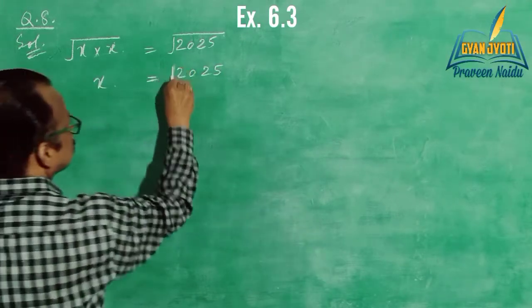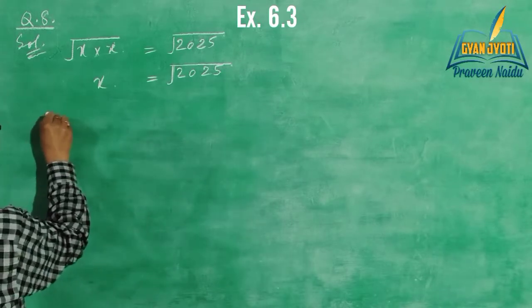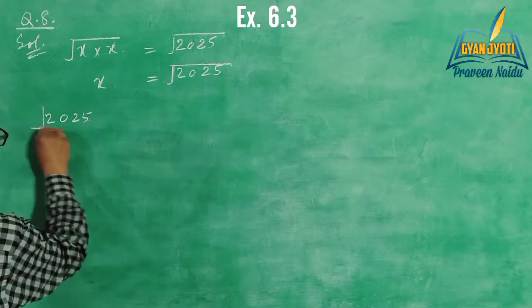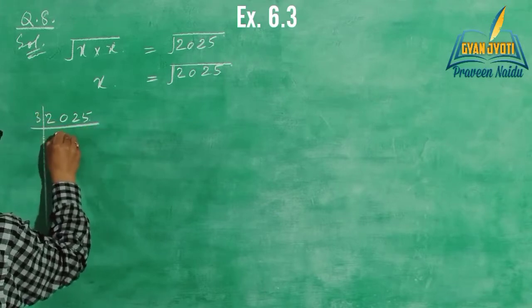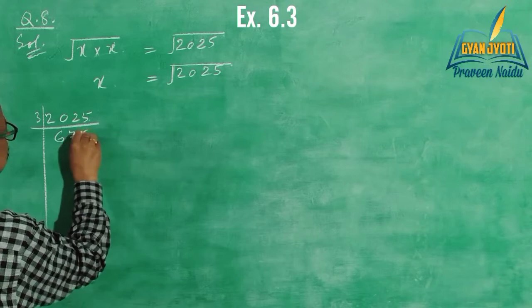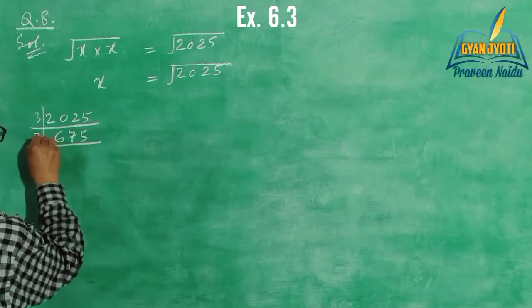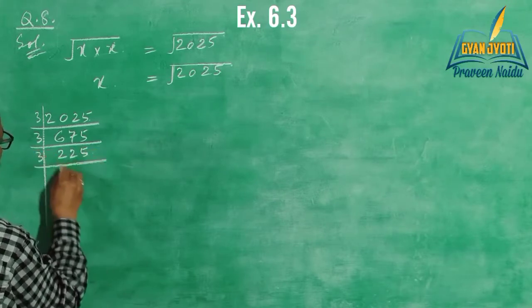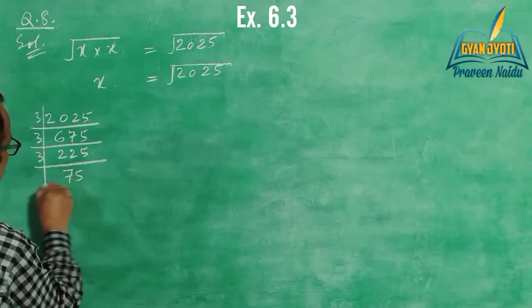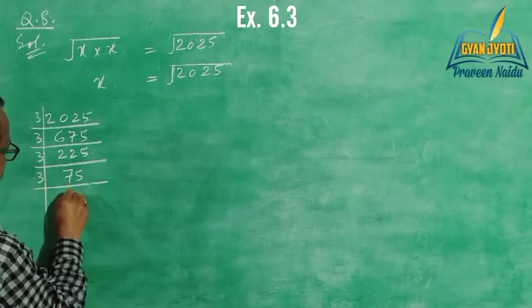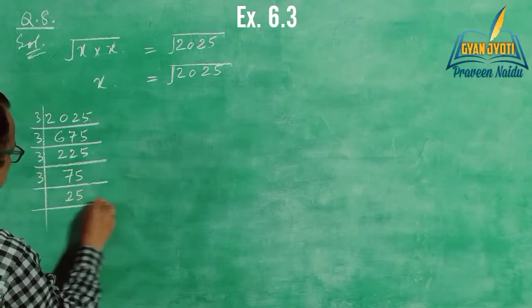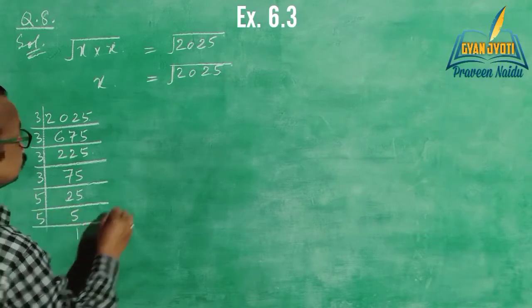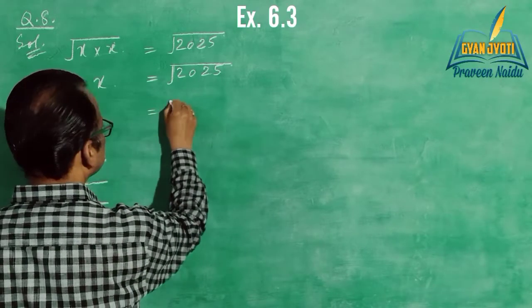And the square root of 2025 can be taken by prime factorization. The prime factors of 2025 are 3 into 3.